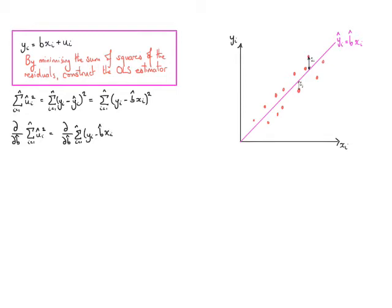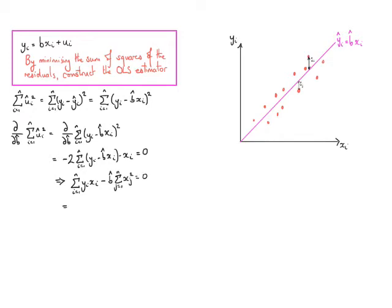Because we're differentiating with respect to b̂, which doesn't change according to each entry in the summation, we can effectively ignore the summation. We take the two down the front, lower the power by one, and multiply by the derivative of what's inside the bracket, giving us minus two times the sum of (yᵢ minus b̂xᵢ) times xᵢ. Multiplying out the brackets gives us that the sum of yᵢxᵢ minus b̂ times the sum of x² equals zero. Our OLS estimator, imposing the intercept equals zero, is b̂ = sum(yx) / sum(x²).